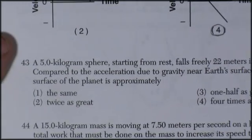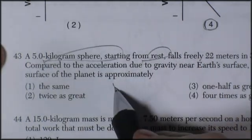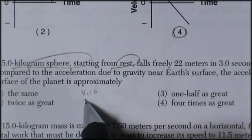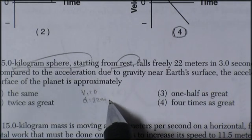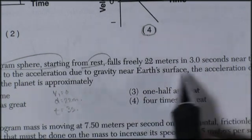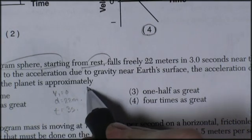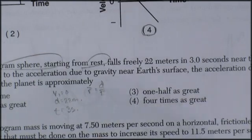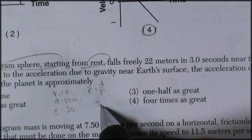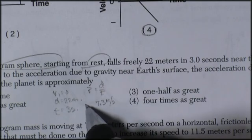Forty-three. A five kilogram sphere, starting from rest, so velocity initial equals zero. And it falls freely twenty-two meters, so it falls a distance of twenty-two meters, in a time of three seconds. Okay, before I read any more of this, I'm going to see what I can do. Well, I've got distance and time, so I can determine average velocity. Average velocity is distance over time. And twenty-two divided by three is going to give me about 7.3 meters per second is the average velocity.